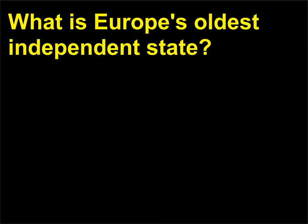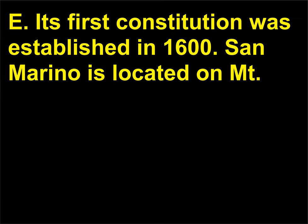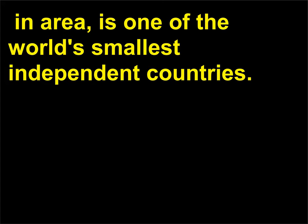What is Europe's oldest independent state? San Marino claims to have been founded in the year 301 CE. Its first constitution was established in 1600. San Marino is located on Mt. Titano in Italy and, at 24 square miles (62 square kilometers) in area, is one of the world's smallest independent countries.